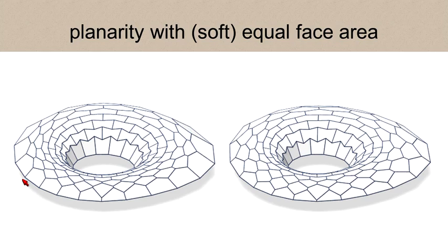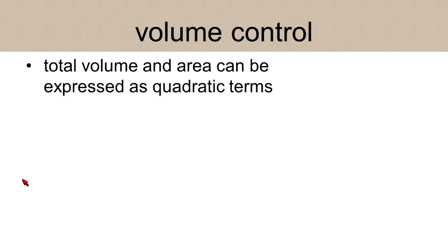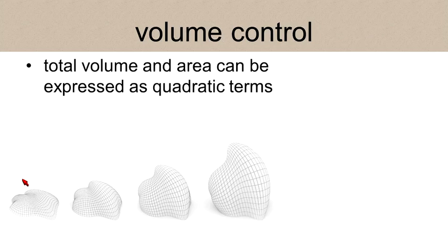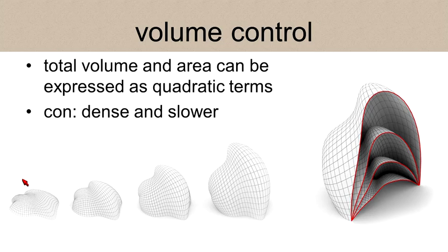We can also design other unconventional fairness energies, such as here. For this planar hex mesh from left to right, it has a more even distribution of face areas. On top of local requirements, we could also aim at global control such as total volume or total area. Unfortunately, such expressions are really dense and may slow down the overall procedure.